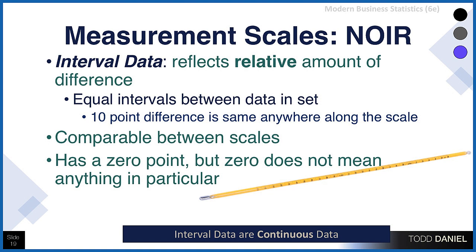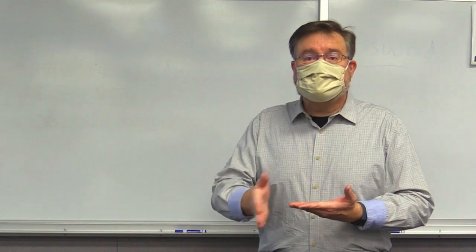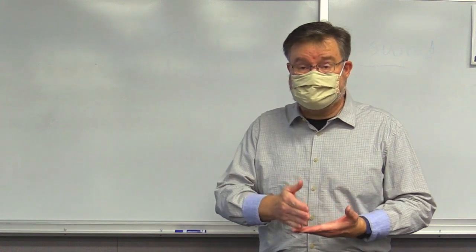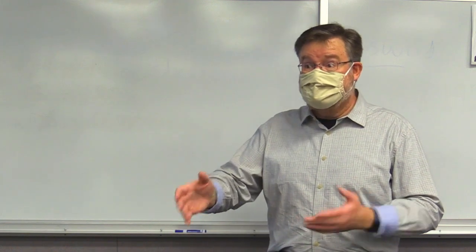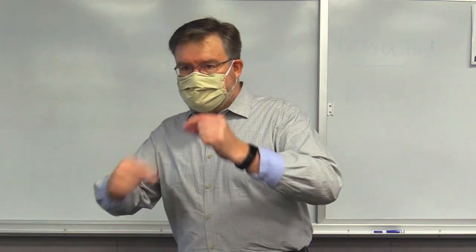Then we move to kinds of numbers that tell us something about quantity — answering questions like 'how many' or 'how much.' There are two types: interval and ratio. We often treat them exactly the same and call them scale data. Interval data reflect a relative amount of difference — using a thermometer as an example, the distance between each marking is exactly the same. The number of degrees between 30 and 50 is the same as between 50 and 70 — the intervals are the same.